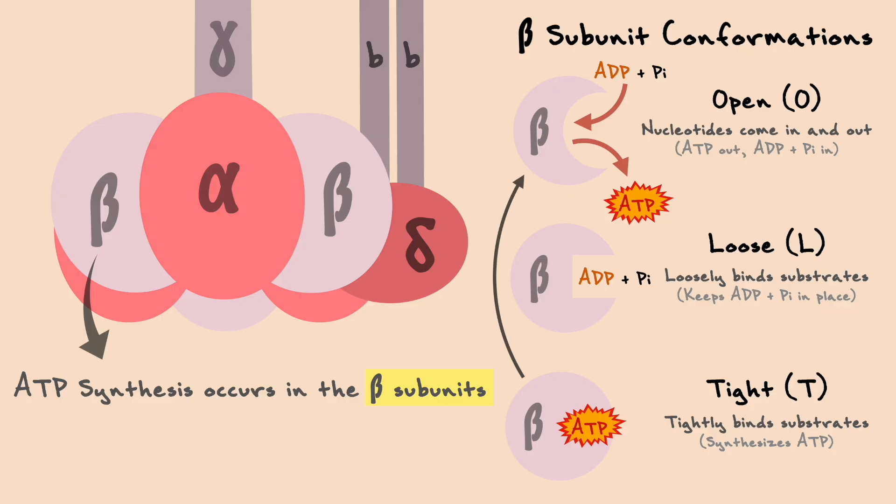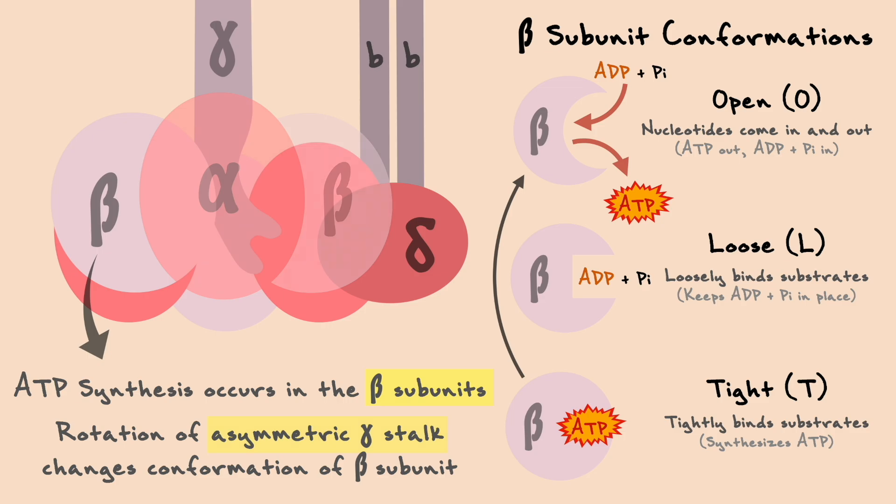As I mentioned previously, what makes the beta subunits change conformation is the rotation of the gamma stalk. When we consider its shape, the stalk has an asymmetric shape and thus allows to have different effects on all three subunits at the same time. As it rotates, it will allow the subunits to sequentially change conformations.